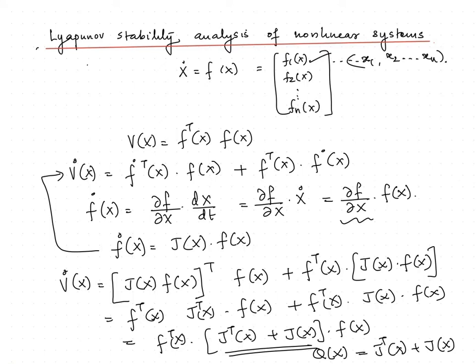Also, if V(x) tends to infinity as norm of x tends to infinity, then the equilibrium point is asymptotically stable in the large, or we can say it is globally asymptotically stable.